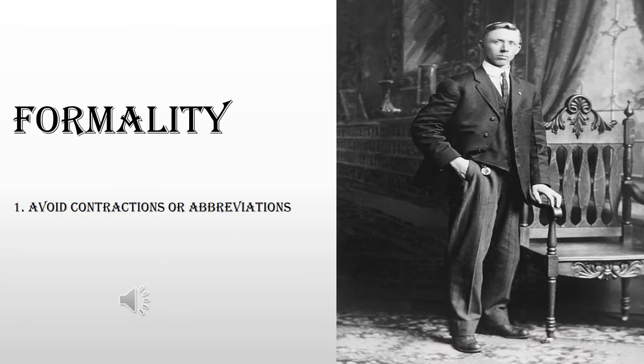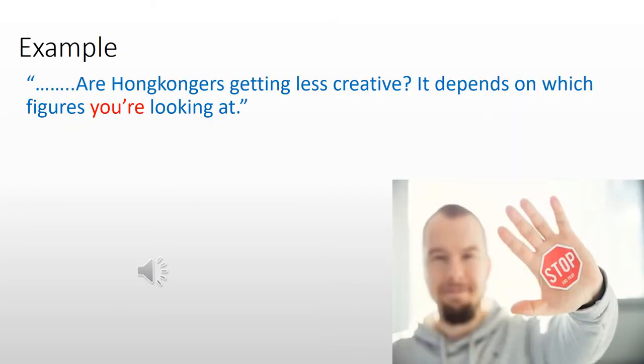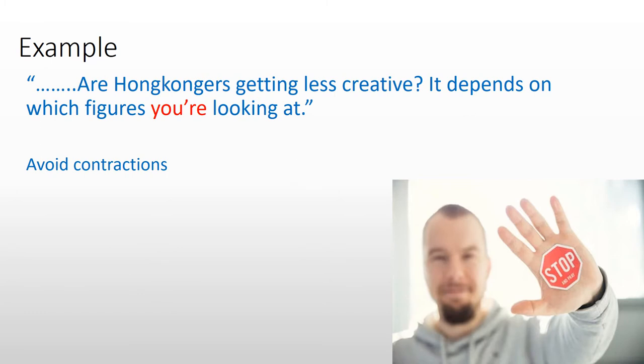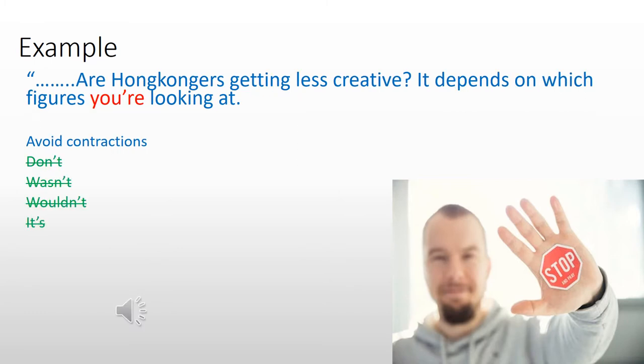In academic writing, we should avoid contractions or abbreviations. Instead of using "you're", we should use "you are". Similarly, make sure your paper is free of expressions such as "don't", "wasn't", "wouldn't", or "it's".